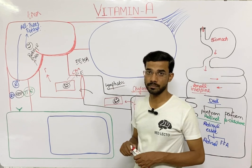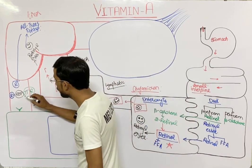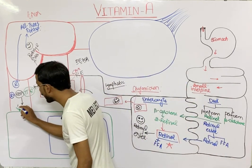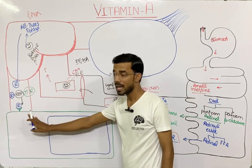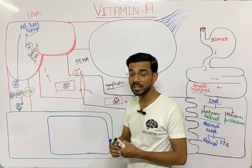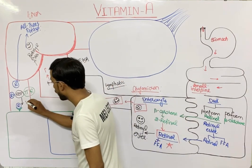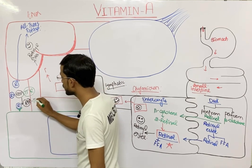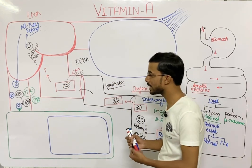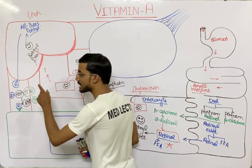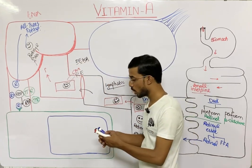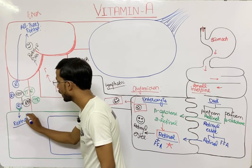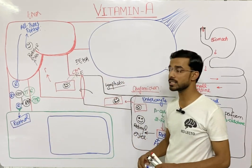When they reach the tissues, retinol binds to the receptors of the tissues, and the retinol binding protein and transthyretin are released. After that, the retinol attached to the receptors enters into the cell.